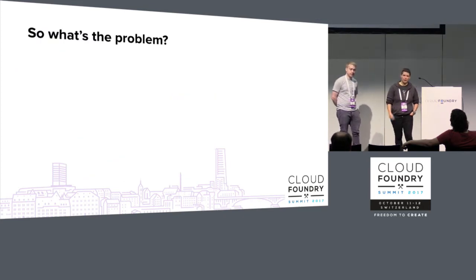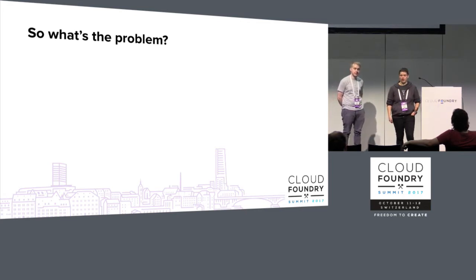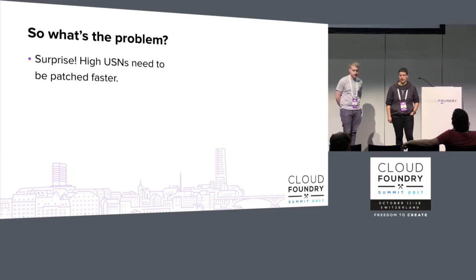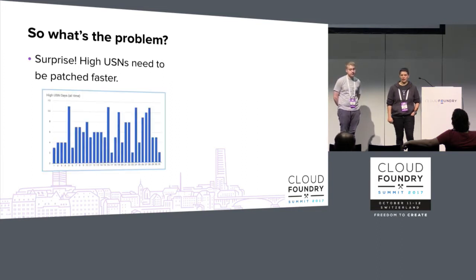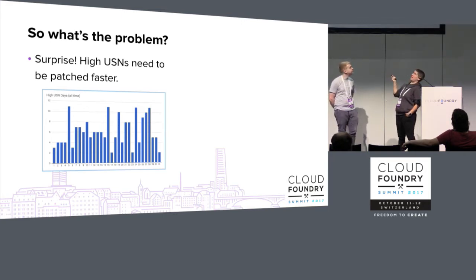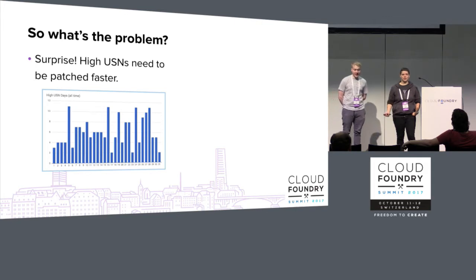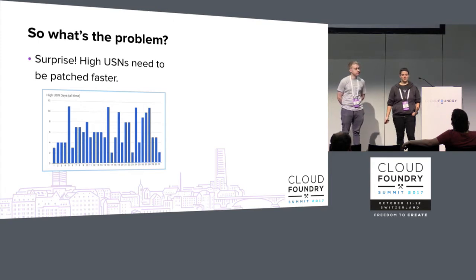So what's the problem? High USNs need to be patched faster. As you can see from this graph, it shows the number of high USNs all time released on a particular day of the month — they tend to be very variable. We can't ever expect any particular day a high USN could come out. We've definitely had complaints from product teams asking why this can't happen more regularly, but this is completely out of our control.